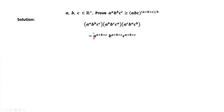We can easily check this result. For example, a^a · a^b · a^c = a^(a+b+c). We can also check: b^b · b^c · b^a = b^(a+b+c). Similarly for c. Simplifying the right-hand side gives (abc)^(a+b+c).